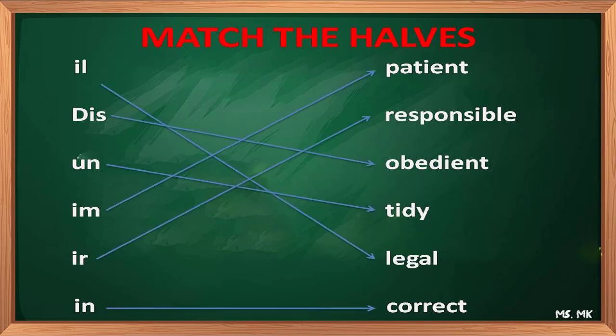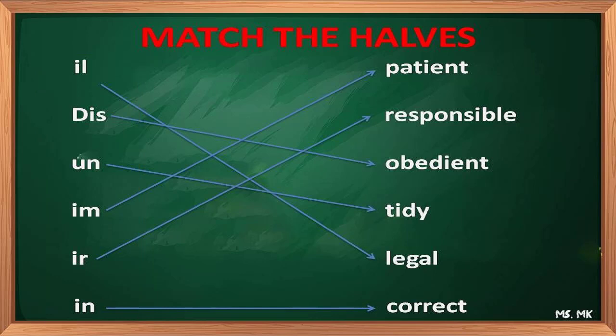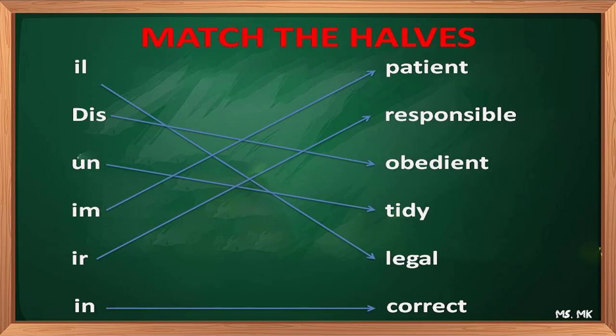So after the matching activity, let's explain. As you may notice, on the left we have syllables that we add to words on the right to form meaningful words. For example, take the word 'patient' — it means having patience. If we add 'im' at the beginning, we get 'impatient.' That 'im' which we add at the beginning of the word is called a prefix, and it changes the meaning of the word.